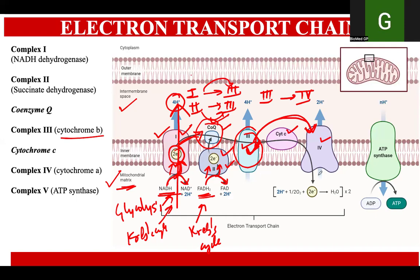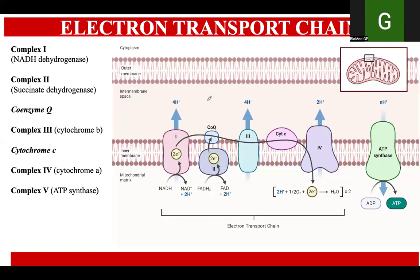At this stage also, there is movement of protons from the mitochondrial matrix into the intermembrane space, and this same process happens at complex number three as well. However, it is not happening at complex number two due to the absence of any channel. After all the transport of electrons, the electrons have accumulated in complex number four, and these electrons are accepted by oxygen molecules, subsequently producing water.